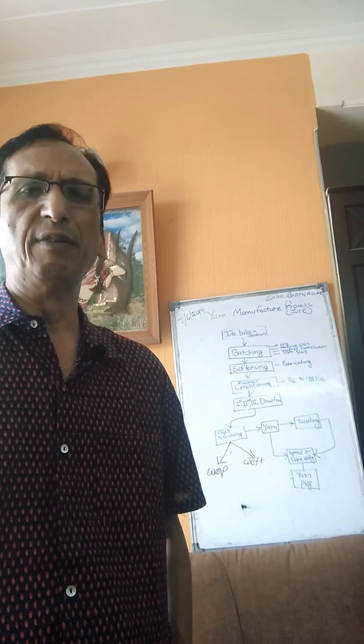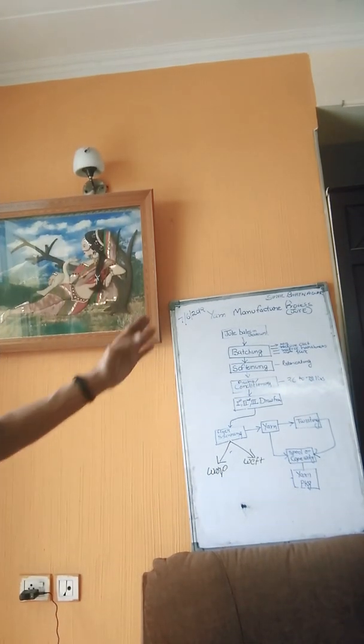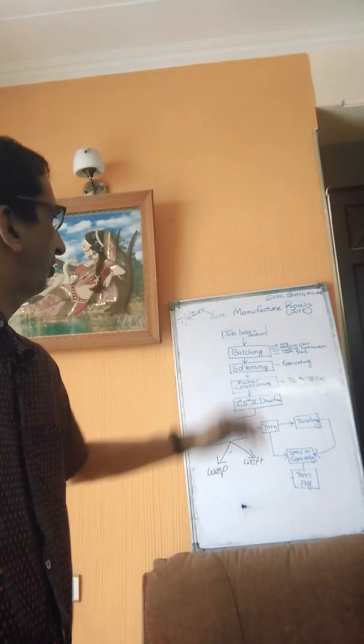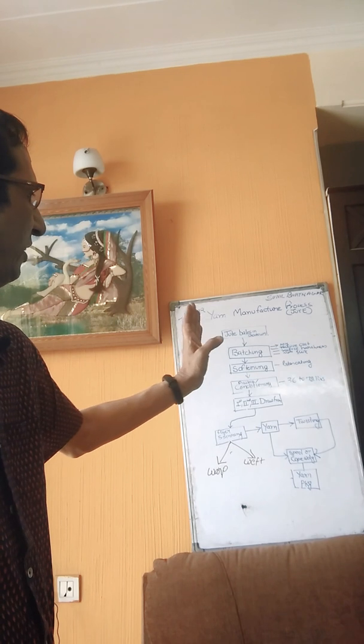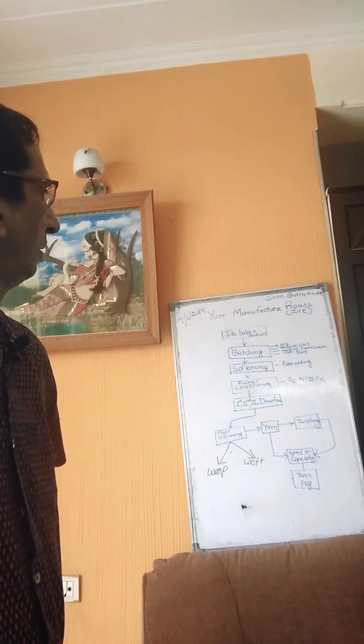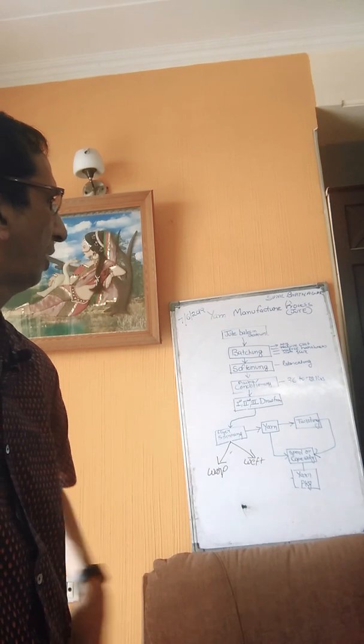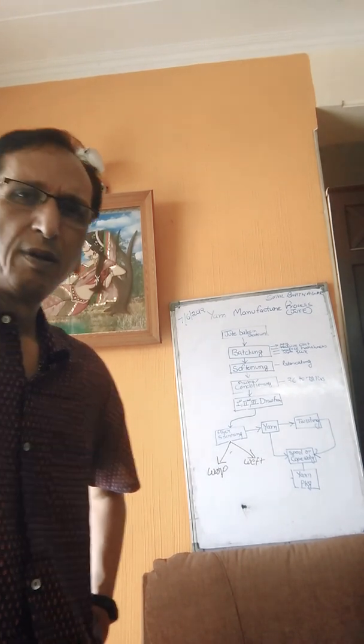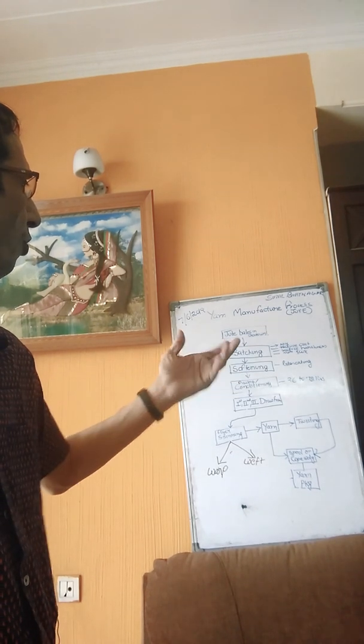The jute from the godown is taken for batching. The object of batching is to mix the material, reduce the cost, reduce the harshness, and make the material more flexible.